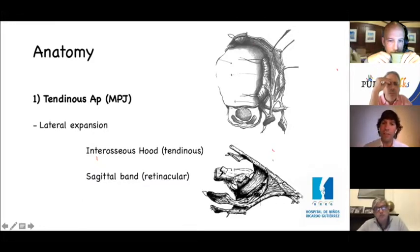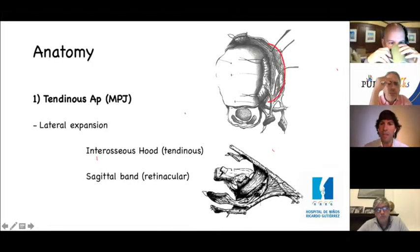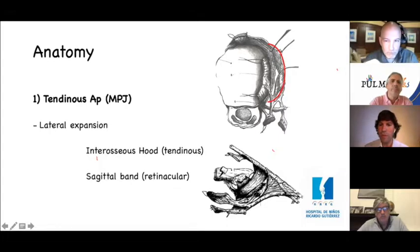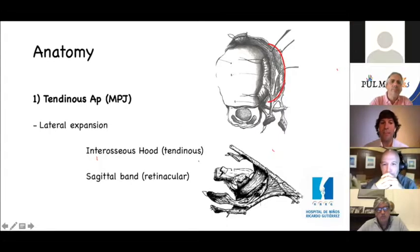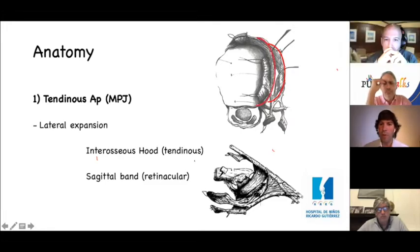The extensor mechanism has a deep expansion that is lax and allows flexion, extension, and excursion. It will be tight in hyperextension of the MP joint. At the level of the MP joint, the extensor mechanism has a lateral expansion that connects the extrinsic mechanism to the intrinsic mechanism via the interosseous hood. Deep to this we have the sagittal band, part of the retinacular system.